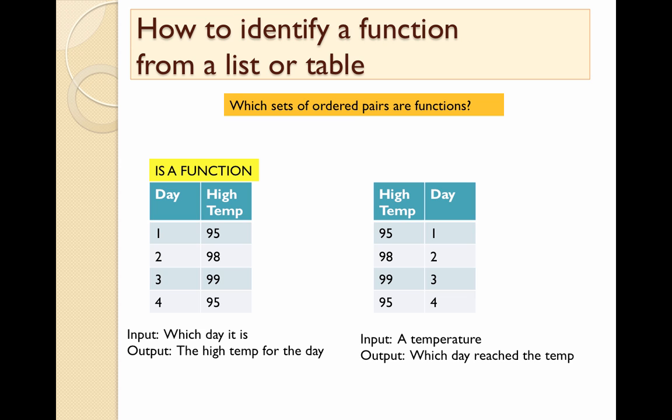Now let's reverse that table. Let's make our high temperature our input, so we have a temperature. Now given a temperature, can we tell from that what day it is? Well, what if we input a temperature of 95? What day is it? Well, according to our table, it could either be day one or day four.